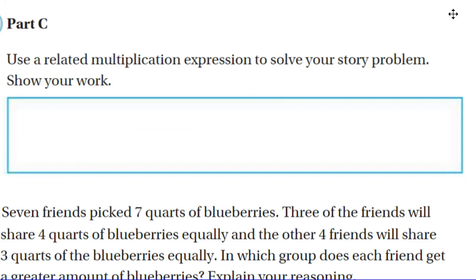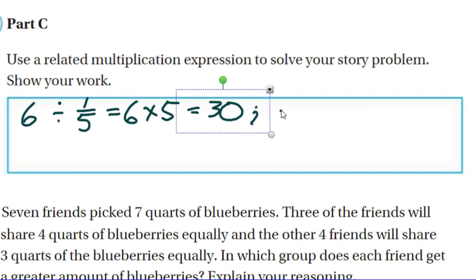Now part C says use a related multiplication expression to solve your story problem. Show your work. Oh, cool. I can do that. So we had six yards. I'm going to put my six yards. We were dividing it by, that's right, one fifth. And six yards divided by one fifth is equal to six times five, because there's five pieces in each yard. And then that's going to equal 30. And of course, that means 30 yards. Let me try my cursive writing. Oh my goodness.